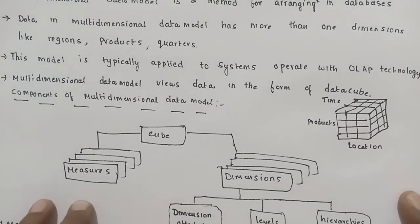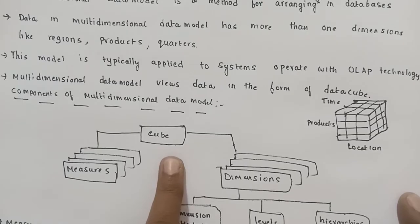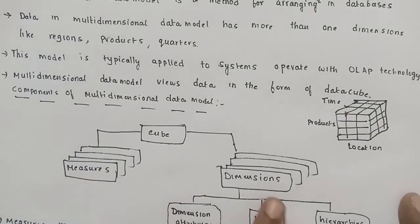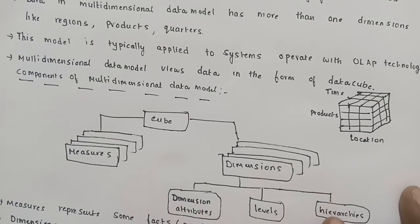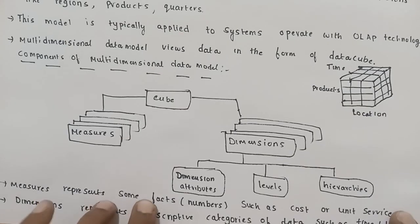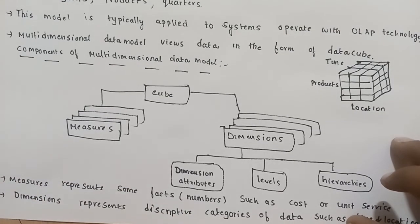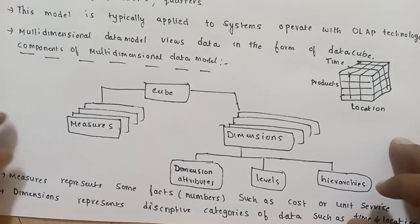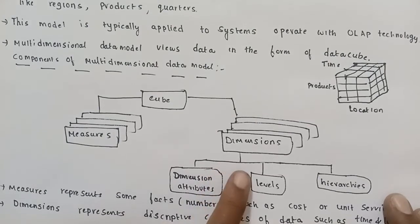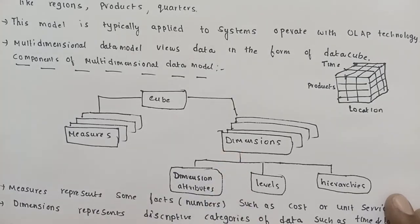The components of the multi-dimensional data model include: data cube, measures, dimensions, levels, and hierarchy. Measures represent facts or numbers such as cost or units sold — these are the data values which are parameters. Dimensions represent descriptive facts about the data.